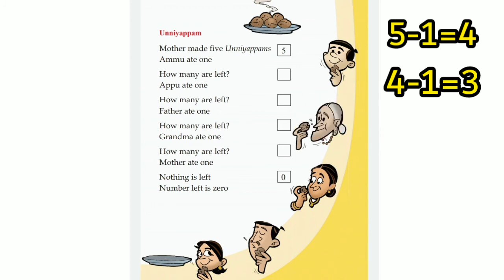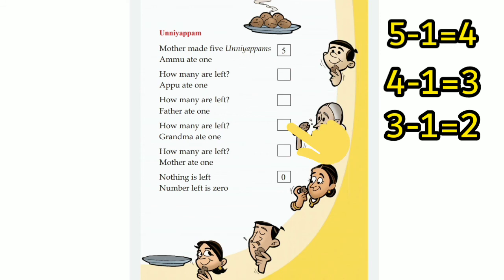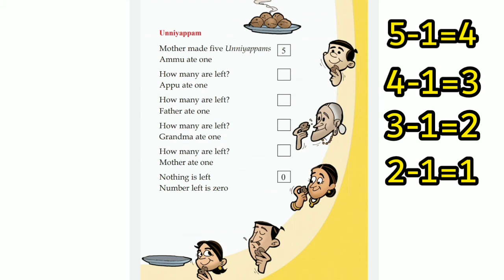Father ate 1. Now you have to write the answer here. So now it's only 2. Yes. Grandma ate 1. How many are left on the plate? Yes, there is only 1 unniapam. That is the answer.